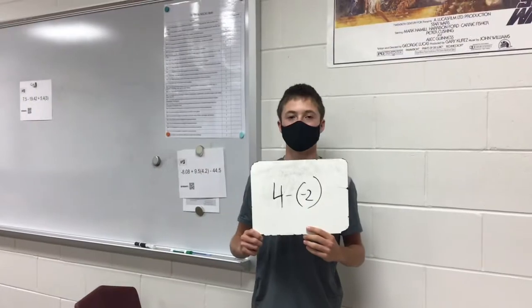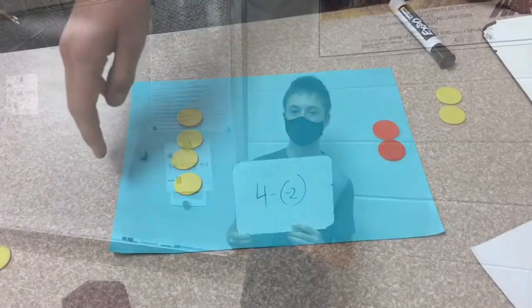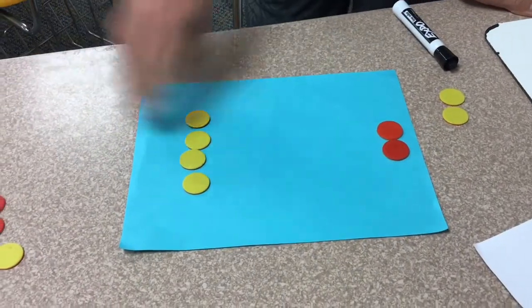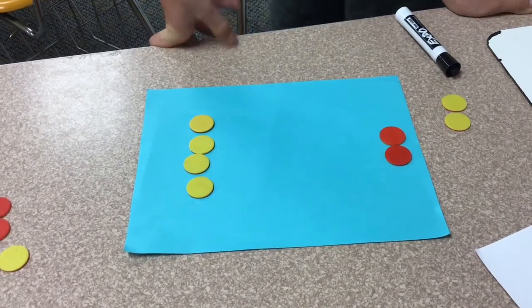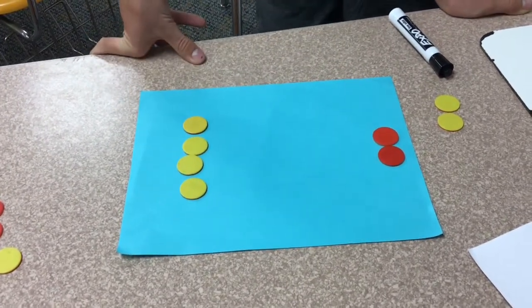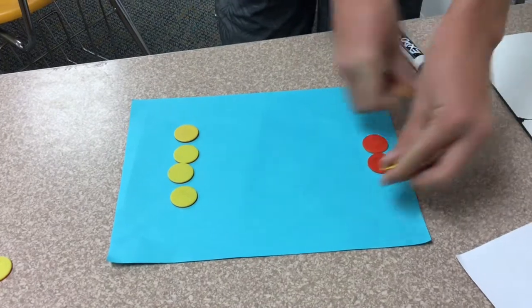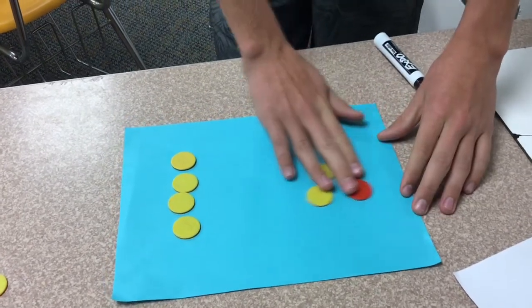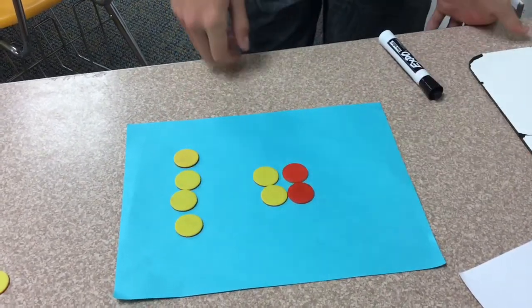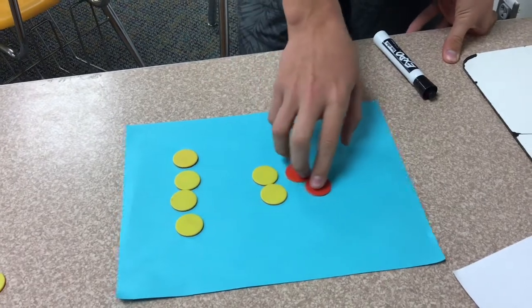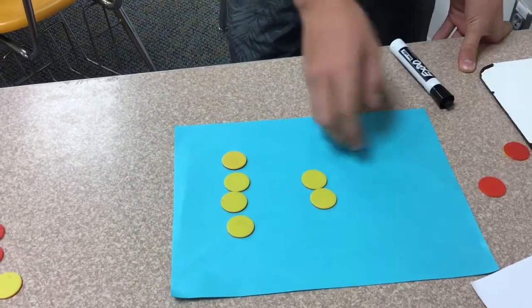4 yellow chips take away 2 red chips. We're going to be doing 4 positive chips take away 2 negative chips. Since we don't have any negative chips to take over here, we have to make pairs of zeros and bring them in. Now we can take away 2 negative chips and we are left with 6 positives.